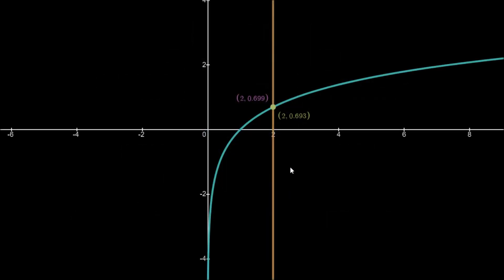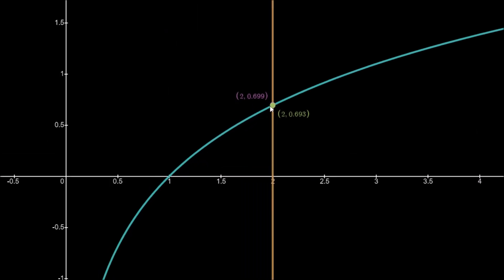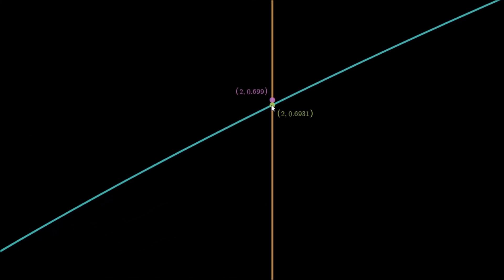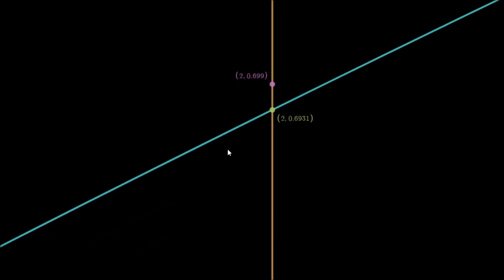The actual value for the natural logarithm of 2 is 0.693, and our simulated value using the CORDIC algorithm is 0.699. This process does work and gives us a good approximation to the natural logarithm. That's all for this video — thank you for listening, see you in the next video.